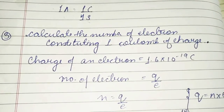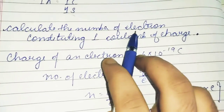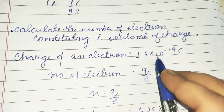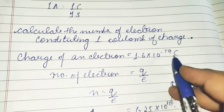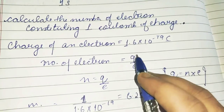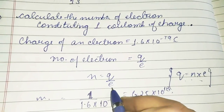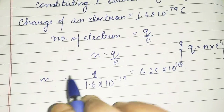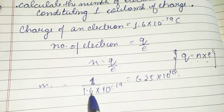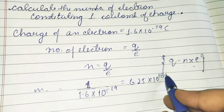Calculate the number of electrons constituting one coulomb of charge. We have to tell the number of electrons in one coulomb of charge. The charge of an electron is 1.6 × 10⁻¹⁹ coulomb. The number of electrons formula is Q by E. We have derived that N equals Q by E, which is one coulomb by the charge of an electron. This gives 6.25 × 10¹⁸.